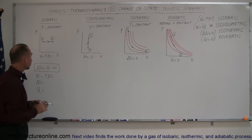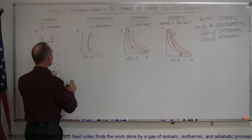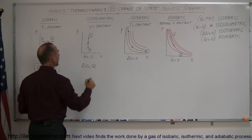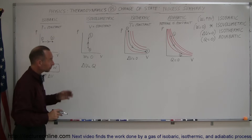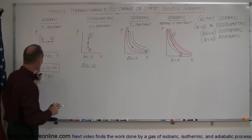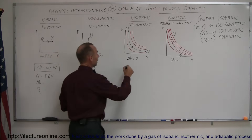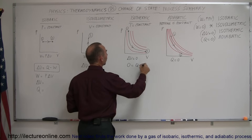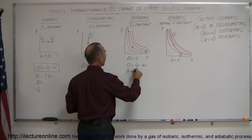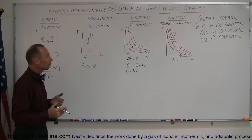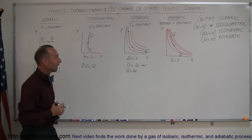In the case of an isovolumetric process, since W = 0, the change in internal energy is simply equal to the heat added to the gas. In the case of an isothermic process, since ΔU = 0, we have 0 = Q − W, which means Q = W — the work done by the gas equals the heat received by the gas.